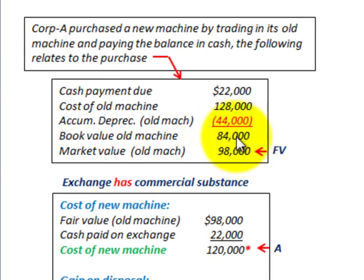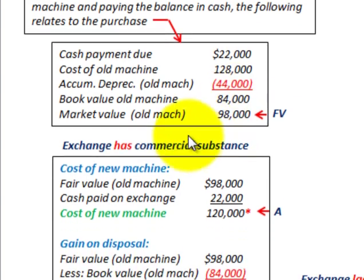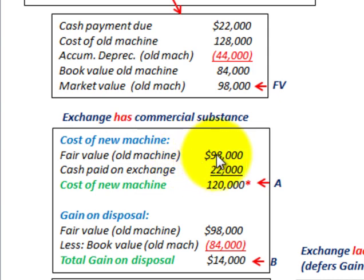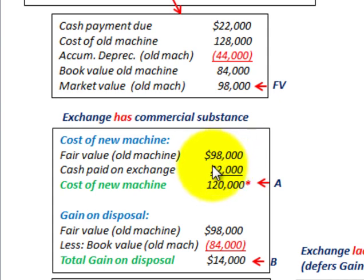The market value is greater than the book value, so let's look at the first case where the exchange has commercial substance. We need to determine the cost of the new machine and the gain on disposal. The cost of the new machine is based on the fair value of the old machine — which was given to us — plus the cash paid on the exchange. Adding those amounts gives us the cost of the new machine: $120,000.